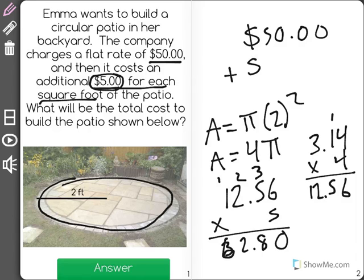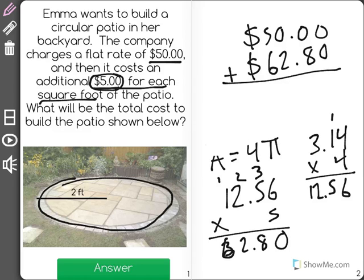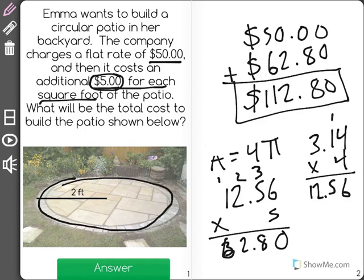Now don't forget you have to add that in with the flat rate of $50, and when you do, you'll find out that you get a total of $112.80 to build the new patio in the backyard.